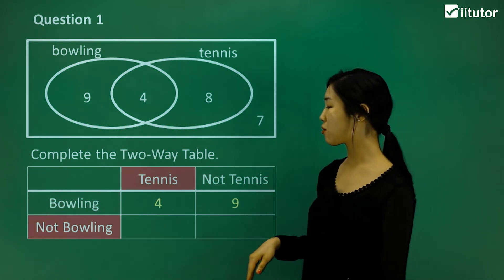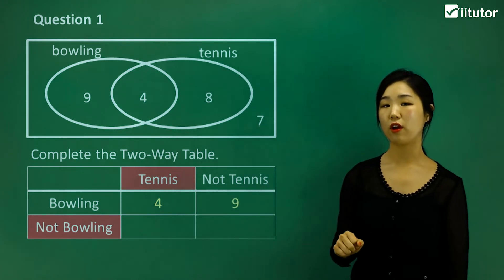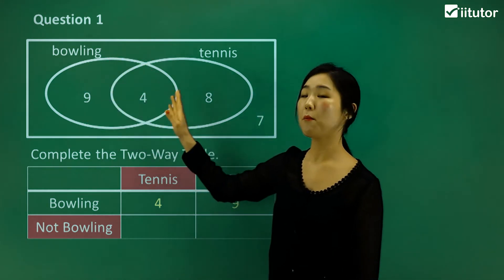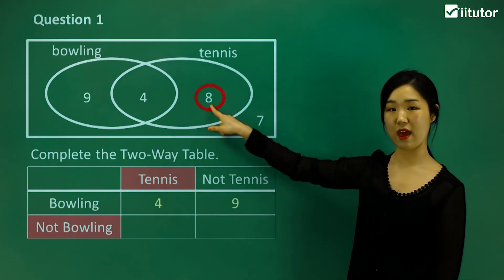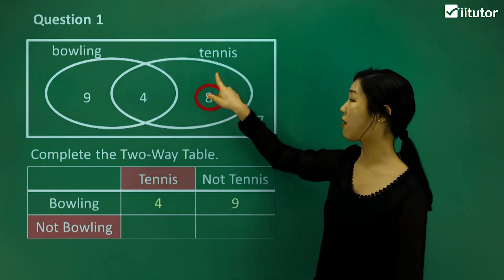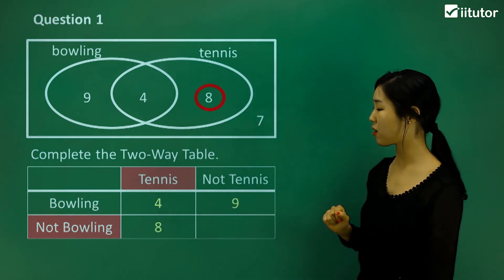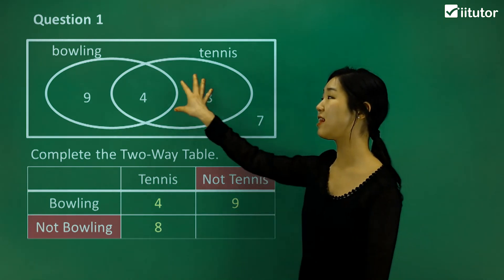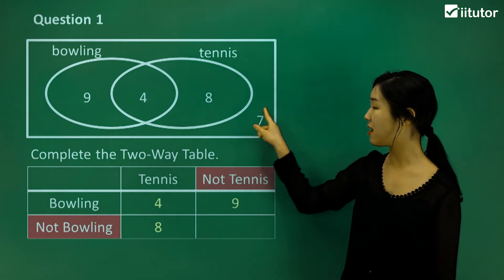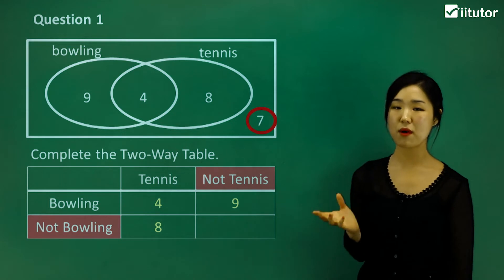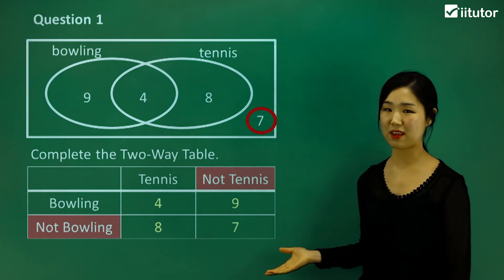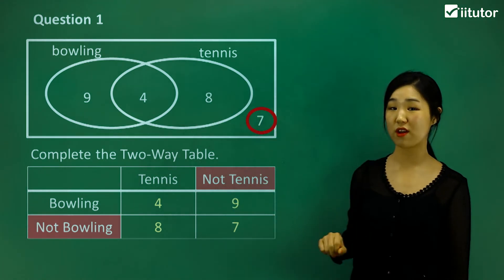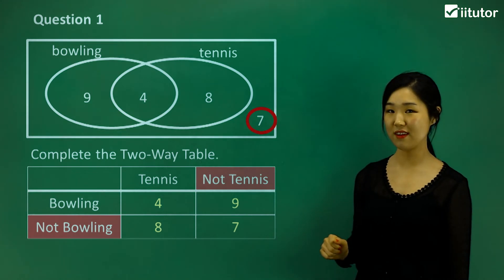Next, I want to know the number of people who do tennis but not bowling, which means we don't want them inside the bowling circle, but we do want them in the tennis circle. Eight of them are not in the bowling circle but are in the tennis circle, so eight goes in there. Finally, those who don't do bowling and don't do tennis shouldn't be in any of the circles — the seven outside the circles must be the people who don't do both sports. So it's all about interpreting the Venn diagram and putting the information into the two-way table.